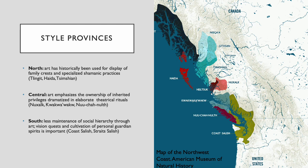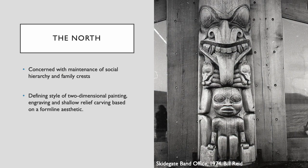The Tsimshian-speaking groups include the Nisga'a, Gitxsan, and Tsimshian. The central coast is really everywhere else except for the green, which is the Coast Salish. Northern Northwest Coast art is typically concerned with social hierarchy and family crests, and there is a defining style in the north in which two-dimensional painting, engraving, and shallow relief carving are based on a form line aesthetic — as seen in this totem pole by Bill Reid.